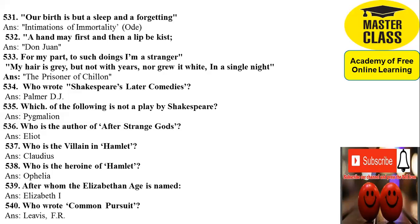534: Who wrote Shakespeare's late comedies? Answer is Dowden. 535: Which of the following is not a play by Shakespeare? Answer is Pygmalion. 536: Who is the author of After Strange Gods? Answer is Eliot. 537: Who is the villain in Hamlet? Answer is Claudius. 538: Who is the heroine of Hamlet? Answer is Ophelia.